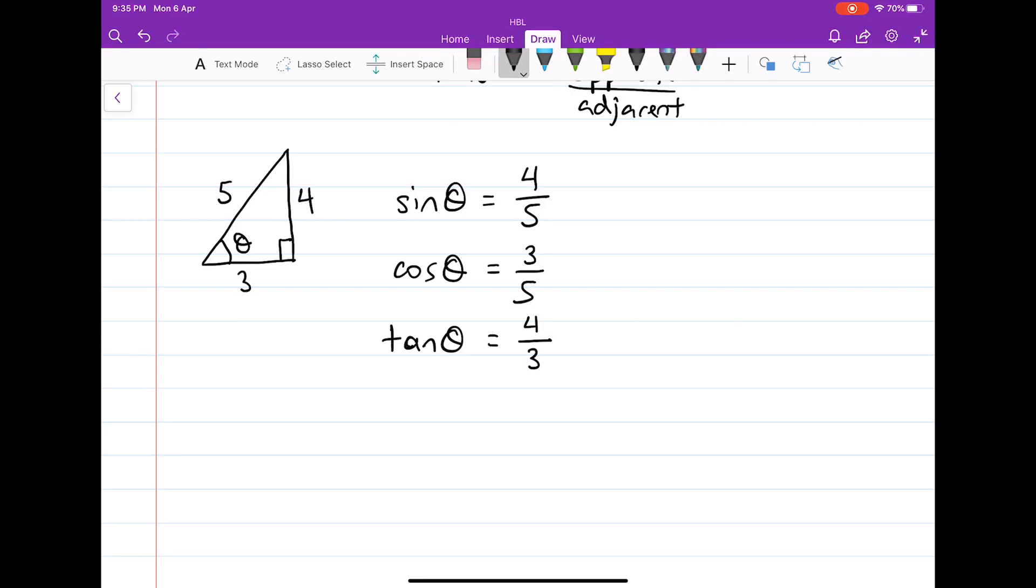Now, again, a reminder: this works when theta is acute—an angle between 0 degrees and 90 degrees. In our next section, we shall investigate what happens with sin, cosine, and tangent when the angle is obtuse, meaning more than 90 degrees, less than 180 degrees.